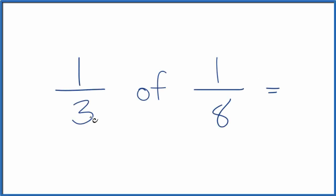If you're asked to figure out 1/3 of 1/8, here's how you do it. The way to think about this is to take the 'of' and replace it with a multiplication sign. So now we're just multiplying 1/3 by 1/8.